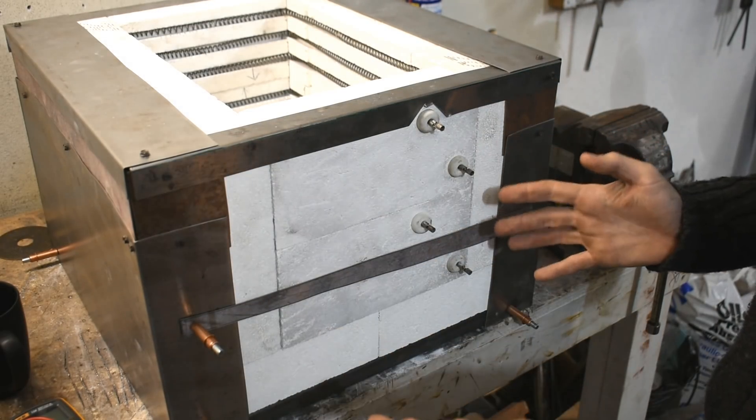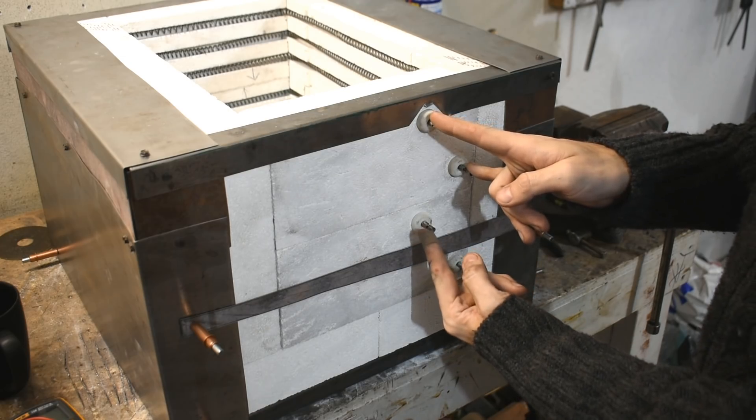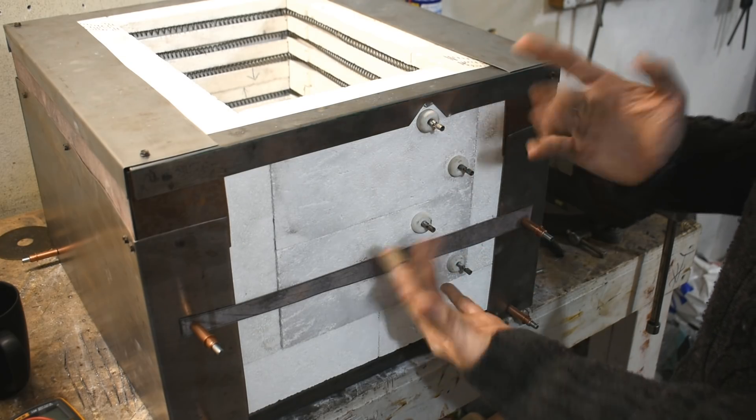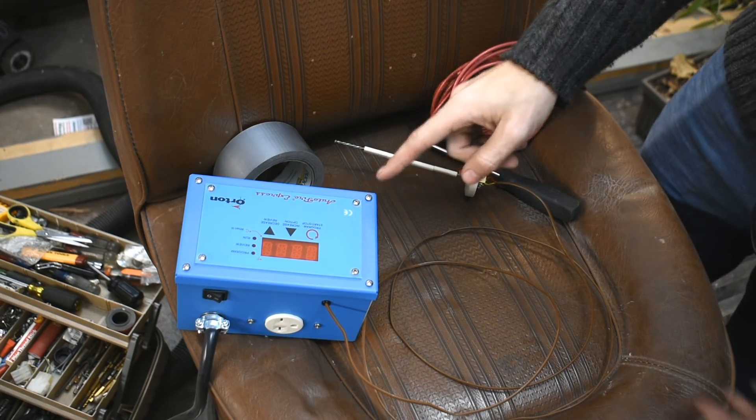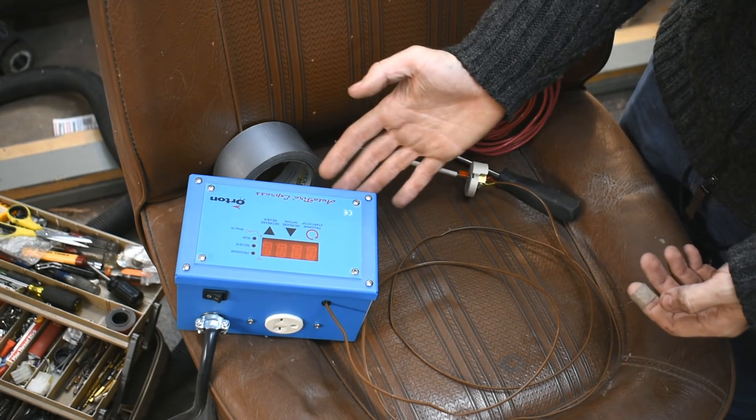So here's a kiln, much the way we left it. Got the two elements poking out here, and they aren't connected to anything. This, however, is the thing that it's going to be connected to.